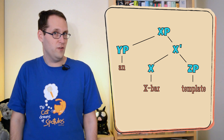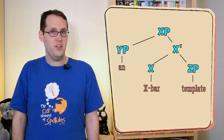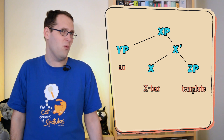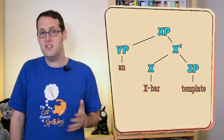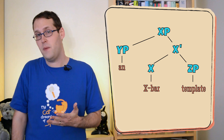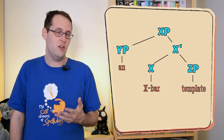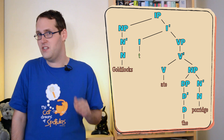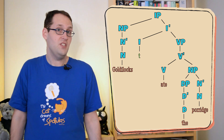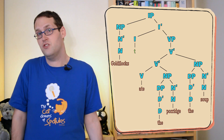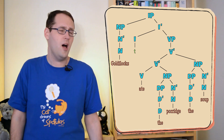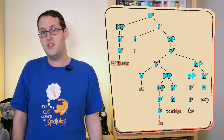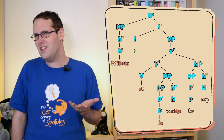But is it too versatile? It looks like the X-Bar template is so freewheeling that it'll create all kinds of sentences that we might not want it to. So just from the theory itself, as we've talked about it so far, if we take a sentence like 'Goldilocks ate the porridge,' there's nothing stopping us from sticking another noun phrase down there at the bottom. Why not have a sentence like 'Goldilocks ate the porridge, the soup'? Except this sentence is obviously pretty bad. It has one too many noun phrases inside of it, and it's impossible to say exactly what it means.